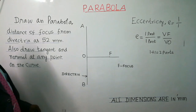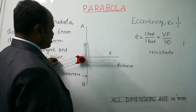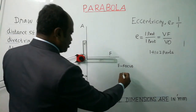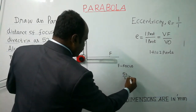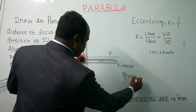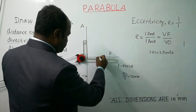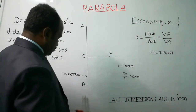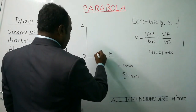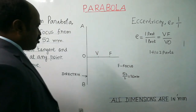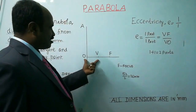Now divide OF into 2 parts. Whatever distance is given will be divided by 2, so 52 divided by 2 equals 26 mm. Put a point at a distance of 26 mm and locate the vertex V, so that VF equals 1 part and VO equals 1 part, making a total of 2 parts.